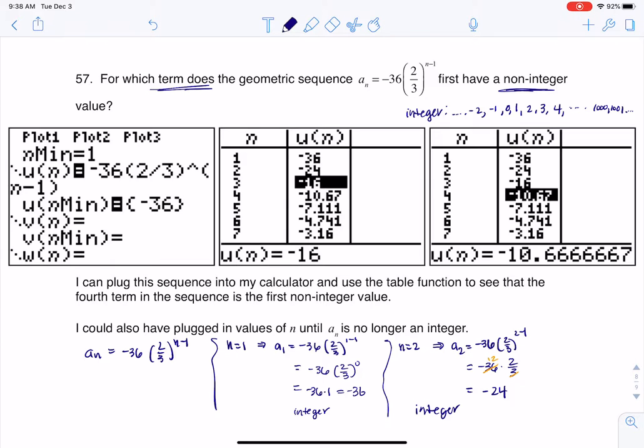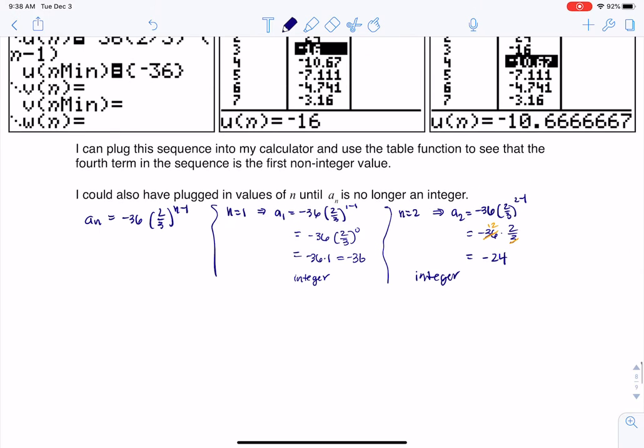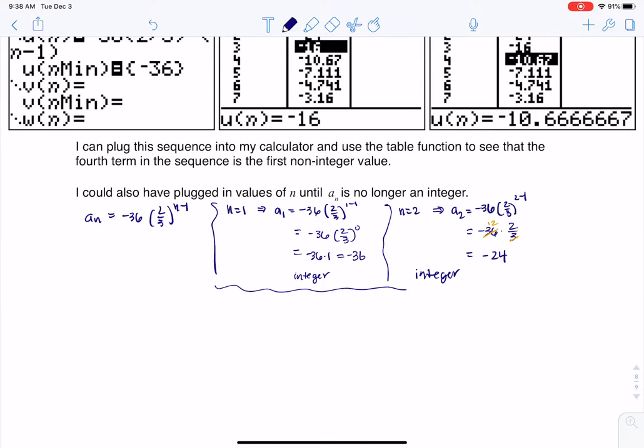So I'm going to just keep on going. Let's see how this works with n equaling 3 and n equaling 4. So if I try n equaling 3, we would have a_3 being equal to negative 36. This would be (2/3) to now the 3 minus 1. So let's speed this up a little. We would have negative 36 times (2/3) squared.